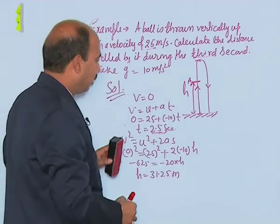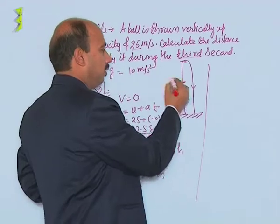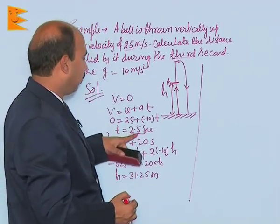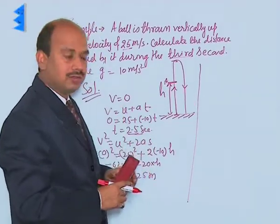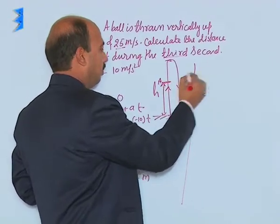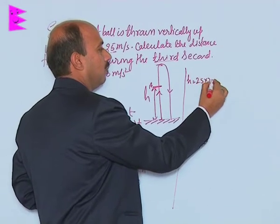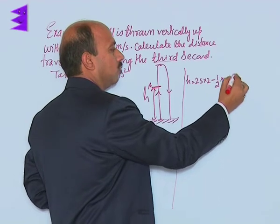In 2 seconds the body goes to this point, and the total is 2.5 seconds. First we calculate the distance travelled in 2 seconds. Distance in 2 seconds is h equals 25 times 2 minus half times 10 times 2 squared.